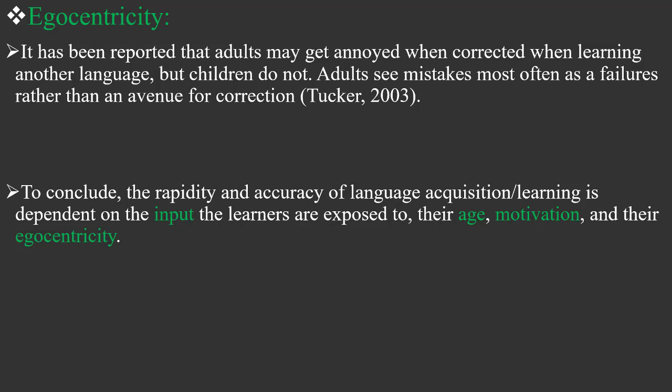To conclude, the rapidity and accuracy of language acquisition or learning is dependent on, first, the input learners are exposed to; their age, whether they are children or adults; motivation, which can be instrumental or integrative; and their egocentricity. This is it for today — thank you very much for your attention.